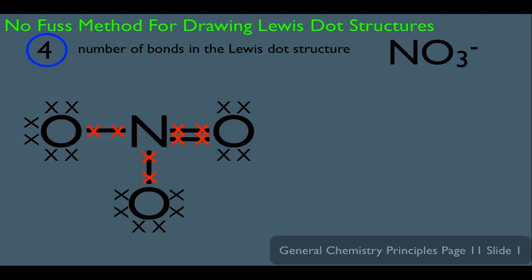There's one more step: fill in the formal charges. Starting with the leftmost oxygen — it has one bond and three lone pairs, so it has a negative one formal charge. The same is true for the bottom oxygen: one bond and three lone pairs gives a negative formal charge. The oxygen on the right has two bonds and two lone pairs, so it has a zero formal charge — we leave it blank. Nitrogen has one bond to the left, one bond down, and two bonds to the right, giving it a plus one formal charge. This is your Lewis dot structure of NO3 minus.